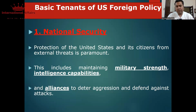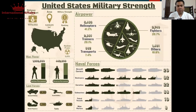The first tenet of US foreign policy is national security. America ensures its national security. The United States has a military strength of about 1.39 million active personnel and 440,000 in reserve. If you look at their helicopters — more than 5,000 — they have transport aircraft as well, 982 fighters, and many other capabilities. At the moment, if you analyze US military strength, they are the number one military in the world in terms of capabilities.